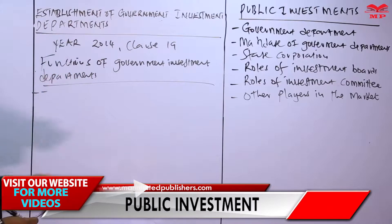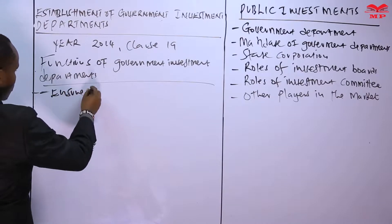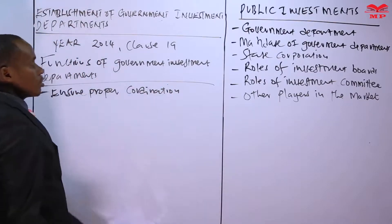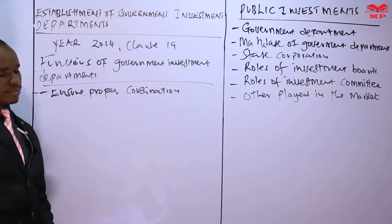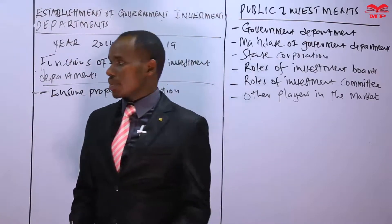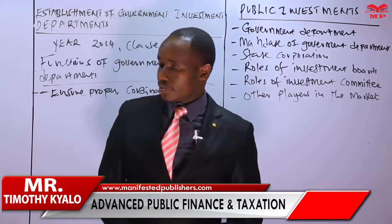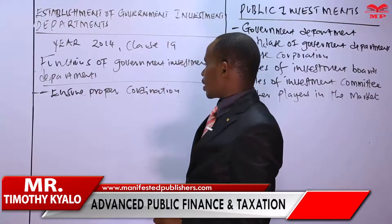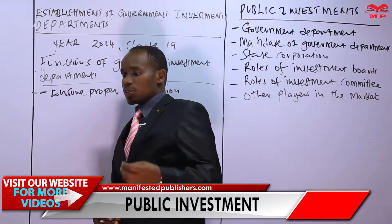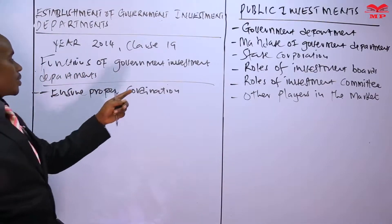These departments are in charge of ensuring proper coordination of government investments. For instance, in Kenya we have investments like Kenya Pipeline and others, and therefore they need to be well coordinated. It is the work of the government investment department to ensure that there is proper coordination of these particular investments.